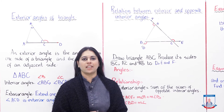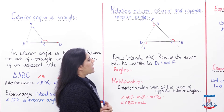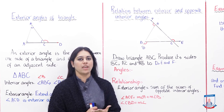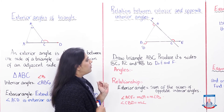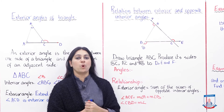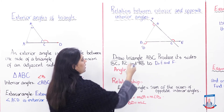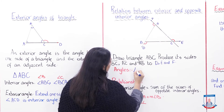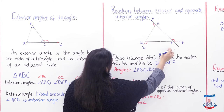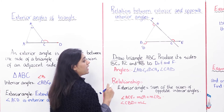Ab hum study karenge the relationship between interior and exterior angles of the triangle. A triangle A, B, C is drawn and its sides have been extended to points D, E, and F. The interior angles are angle A, B, C; angle B, C, A; and angle C, A, B. The exterior angles formed are angle B, A, F; angle A, C, E; and angle C, B, D.